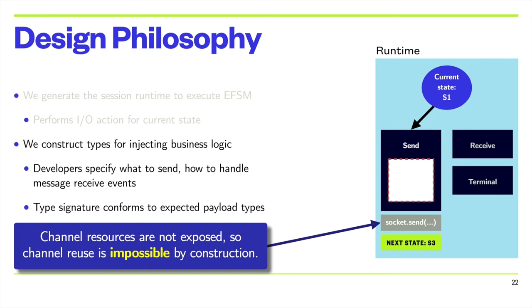State transitions represent channel resources and can only be used once. As the APIs are designed to respect the EFSM by construction, they are designed to make channel reuse impossible. This means that the developer can only customize what message to send and how to handle a receive, but cannot trigger these channel actions manually. The type signatures of the APIs match the expected payload types of each message to guarantee the absence of communication mismatches.